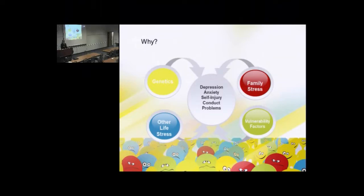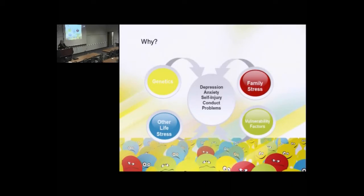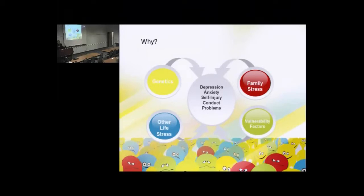Family stress includes things like parenting, parent availability, parent support and affection, whether there's abuse or neglect, parent substance abuse problems, or parent mental illness that affects their ability to parent effectively. Other life stress includes relationship stress, bullying issues, and school performance stress. Vulnerability factors also play into it — students are wired different ways. Some are more sensitive, more prone to worrying or being anxious. All of this together creates a picture of why we see so much behavioral health and mental health concern.